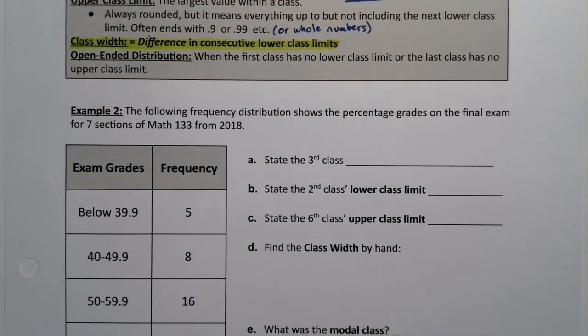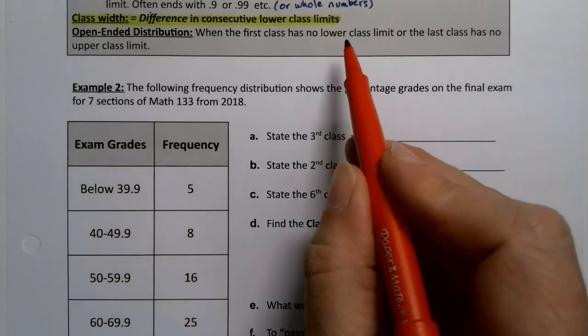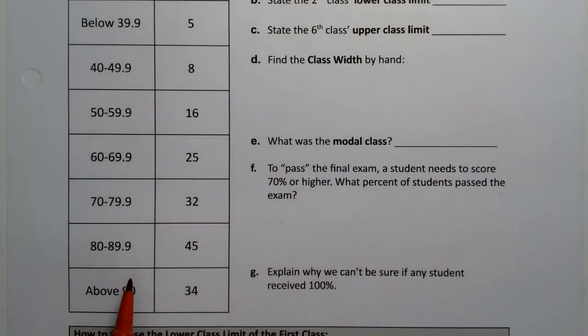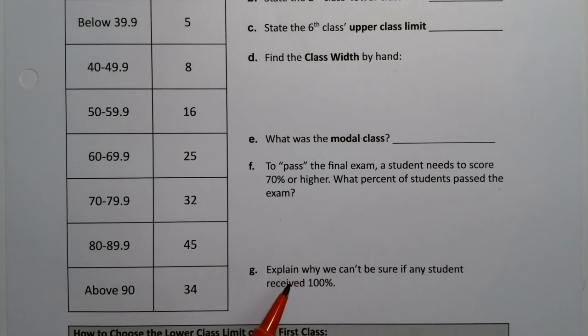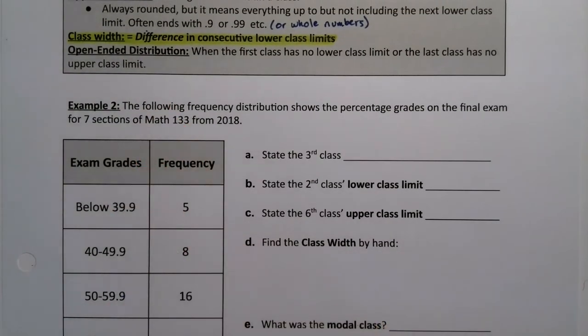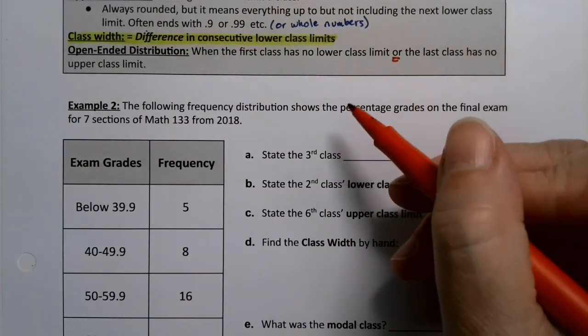An open-ended distribution is what this particular example is. You can have it on the lower end with no class lower limit. See how this first class just says everything below 39.9. You don't know if there was a 20 or a 15. You don't know. That's open-ended. Same thing down here. Everything above 90. So you don't know what the highest value is, which is actually the answer to this question G, because the upper class or the last class in this table is open-ended. You can be open-ended on the low side, open-ended on the high side, or both.